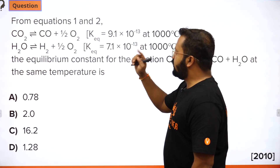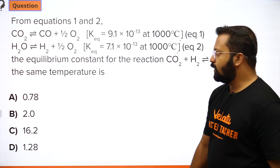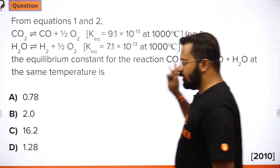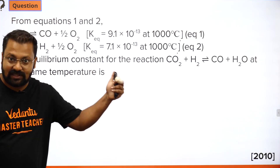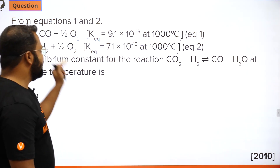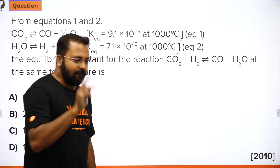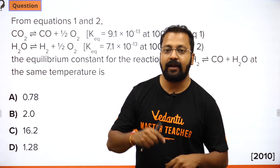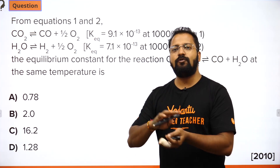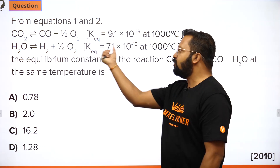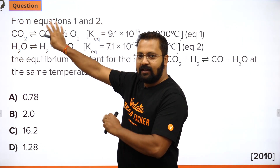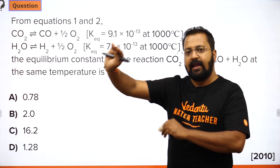Next question: given equations one and two, find the equilibrium constant for a third reaction. This is possibly the easiest question in the paper. When you use two equilibrium constants to form a third equation, you just need to do algebraic manipulation. Keep the first equation as it is, and invert the second equation — meaning H₂O which was on the reactant side moves to the product side, and H₂ and O₂ move to the reactant side.